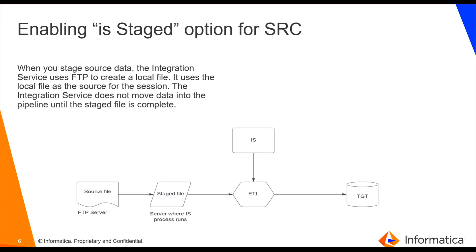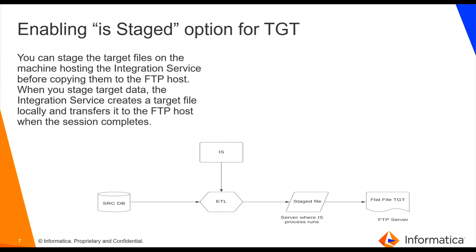When enabling the staged option for your source file, the integration service uses FTP to create a local file and uses this local file as the source for the session. The integration service actually creates the stage file on the server where the integration service process runs. In this way, it avoids any partial transfers or partial access due to network failures. Only once the staged file is created will it be used as the source for the ETL process.